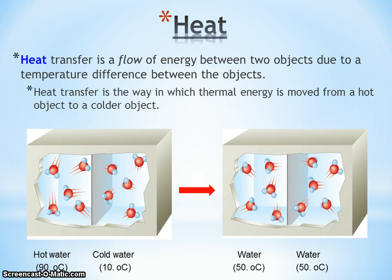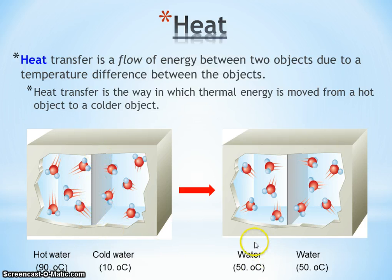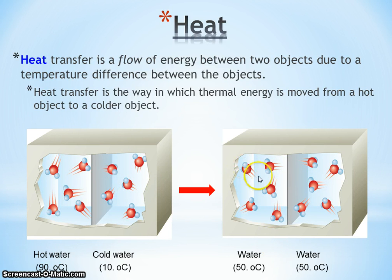So in our example from earlier — you can draw this in your notebook — we had our hot water on the left and cold water on the right. What's going to happen is if the barrier is small enough, that heat from the left is going to transfer from the hot to the cold water. It's going to continue to do that until both water samples are the same temperature. Once they reach the same temperature, heat transfer will go equally in both directions.